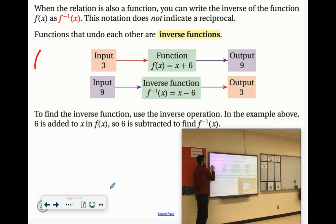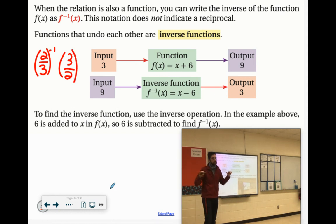Back in the day, if you had two-thirds to the negative first power, you could just flip the whole fraction and make it to the positive first power. It's not the same. This is just the function notation for the inverse.